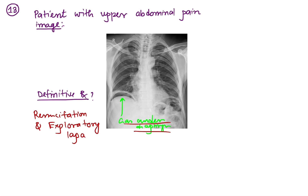The answer is resuscitation and exploratory laparotomy as the definitive treatment for a patient presenting with upper abdominal pain and gas under the diaphragm on chest X-ray, suggestive of visceral perforation such as peptic ulcer perforation or small bowel perforation.